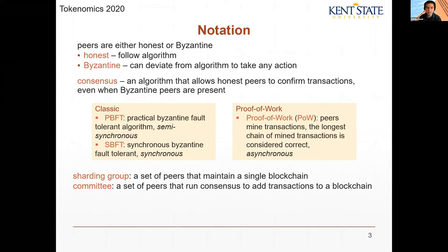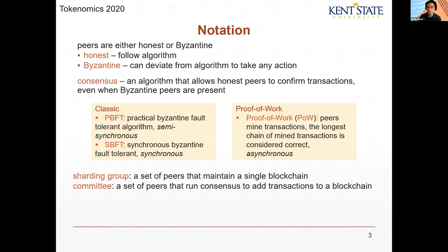We consider two classifications for a consensus algorithm: Classic and Proof-of-Work. Classic is PBFT, which is semi-synchronous, or SBFT, which is fully synchronous. Proof-of-Work, as many of you are familiar with, is asynchronous. We also introduce two terms: a group and a committee. A group is a set of peers responsible for maintaining a blockchain — in Bitcoin, every peer is part of the same group. A committee is a set of peers running a consensus to confirm or add a transaction to the blockchain, and it could be composed of multiple groups or a subset of peers from a group.